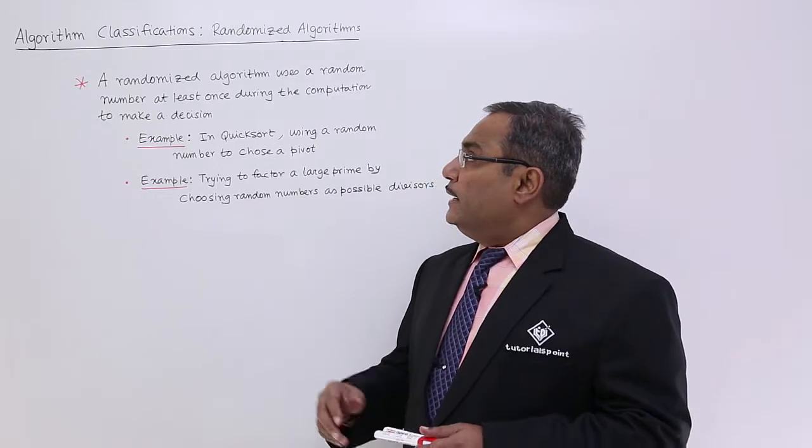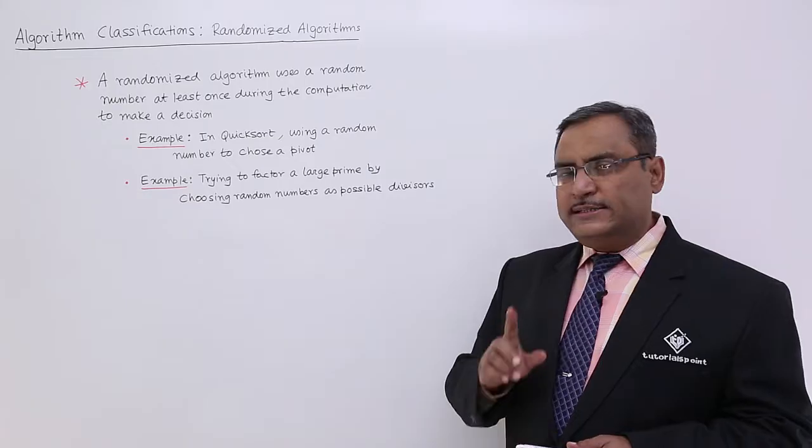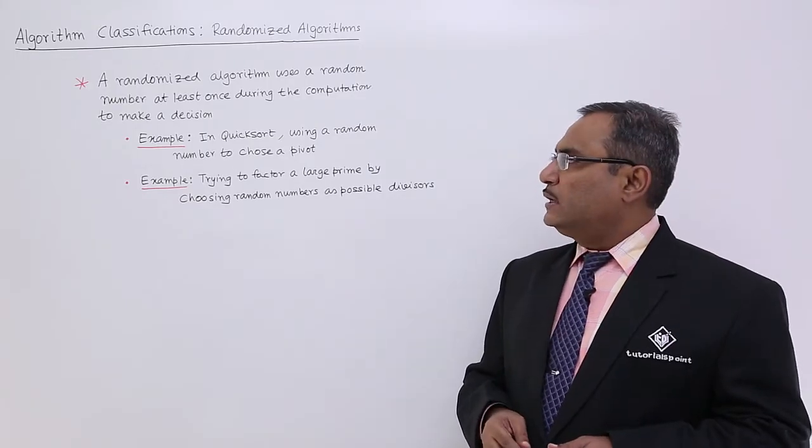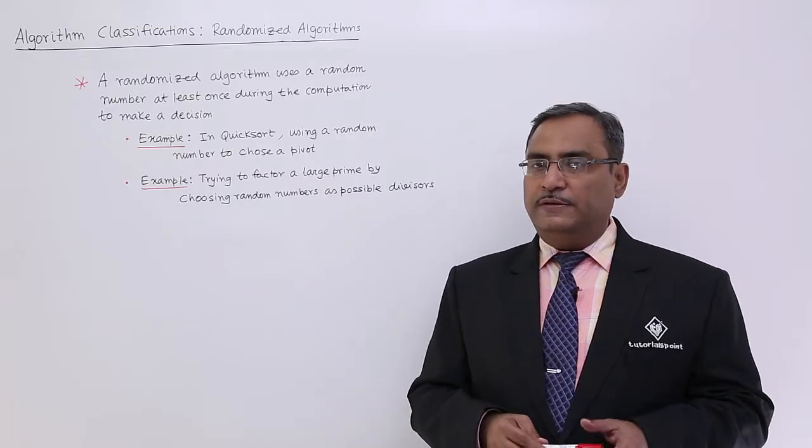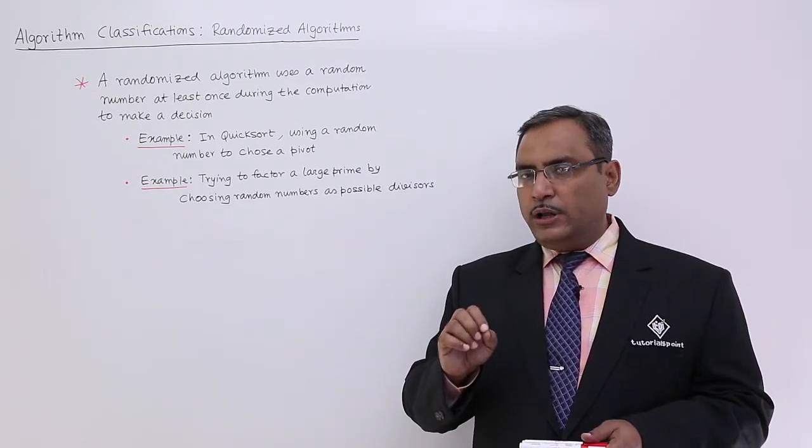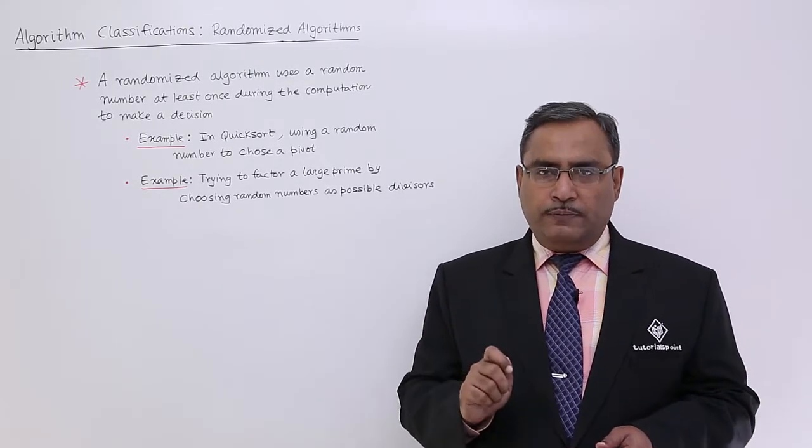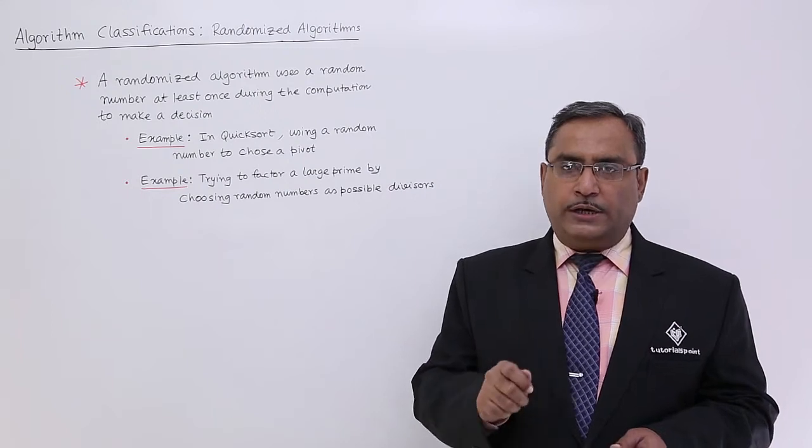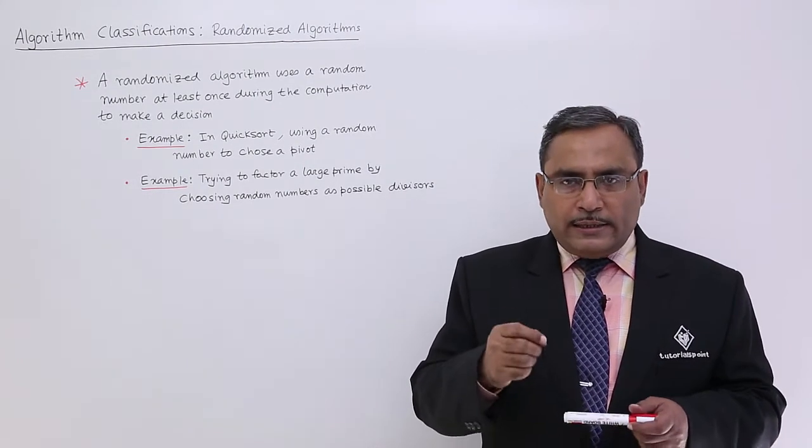A randomized algorithm uses a random number at least once during the computation to take a decision. That means this randomized algorithm will be using random number generation through which one random number will be generated at least once in the algorithm to take one decision.